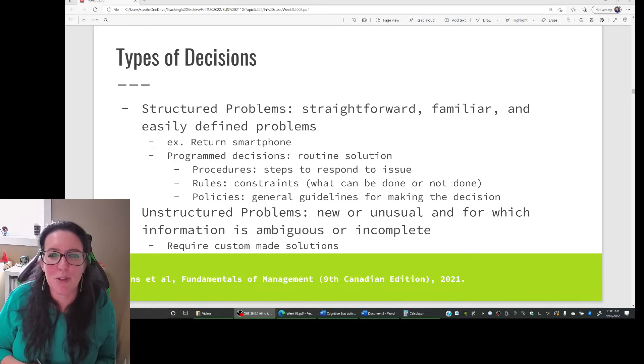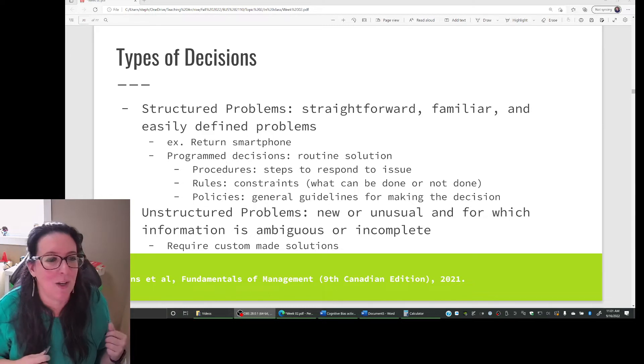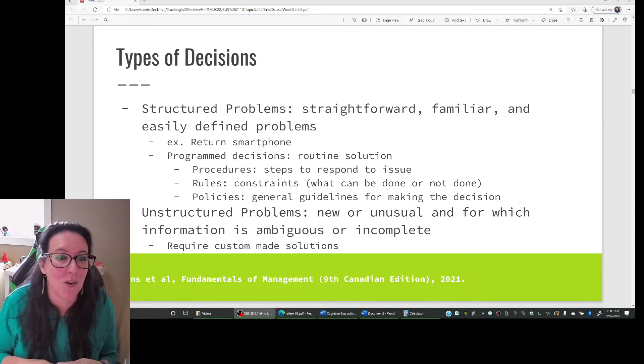We probably have procedures in place in terms of steps to respond to the issue. So if you are returning a smartphone, you have to fill out a form in terms of why the return. We also have rules or constraints, what can be done or not done. So let's suppose that what's being returned is an iPhone 13. And just two days ago, they released an iPhone 14. So this person only bought it a week ago, but it's not the newest model.